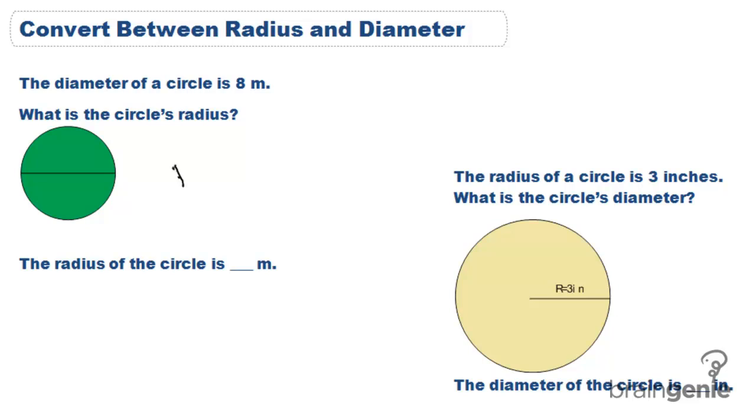The diameter is equal to 2 times the radius. So if we know our diameter is 8, we just divide by 2 to get a radius of 4 meters.